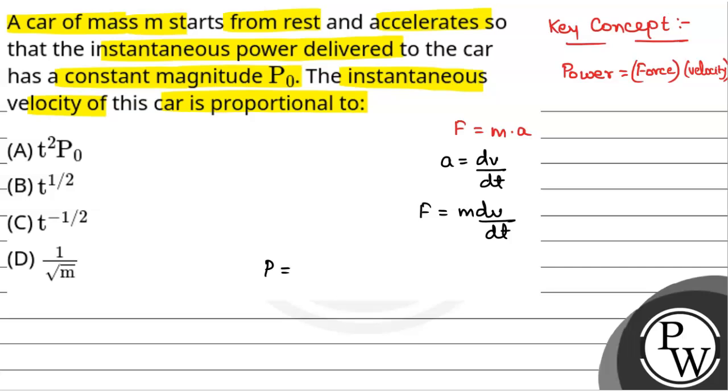So, force will be equal to M into dV by dt. Power P will be equal to M into dV by dt into V. We will have this at power magnitude P0.